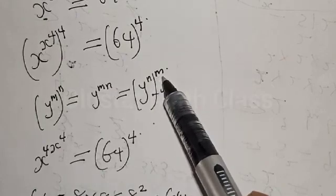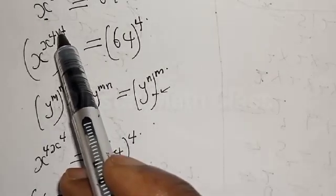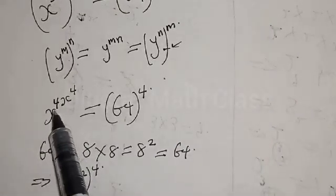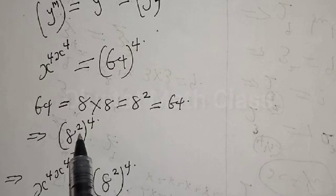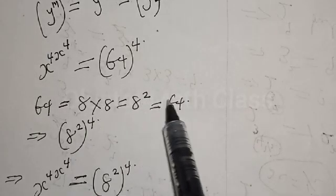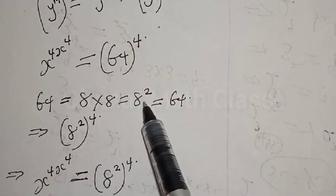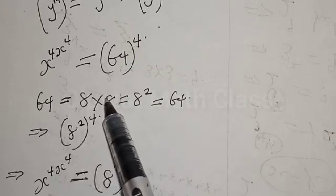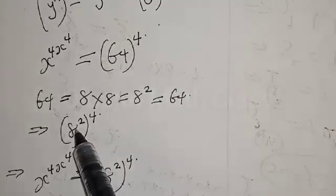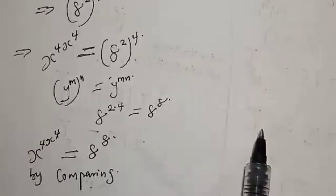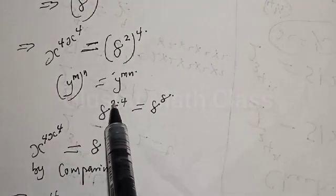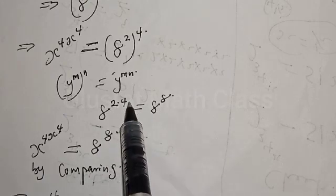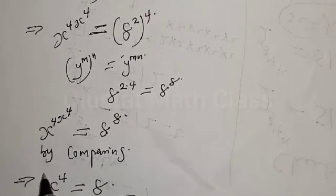Using that substitution, the 4 comes in and we have s raised to power 4 raised to power 4 equal to 64 raised to power 4. Since 64 equals 8 squared, we substitute to get 8 squared raised to power 4 on the right-hand side. Applying the exponent rule, 8 squared raised to power 4 equals 8 raised to power 2 times 4, which is 8 raised to power 8.